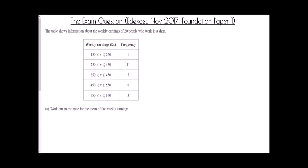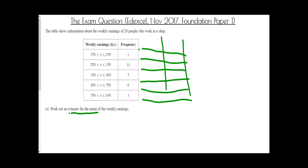Now for the exam question from the NXEL paper in November 2017, Foundation Paper 1 — a non-calculator question. The table shows information about the weekly earnings of 20 people who work in a shop. We need to work out an estimate for the mean weekly earnings. We add extra columns for midpoints: 150 to 250 → 200, 250 to 350 → 300, 350 to 450 → 400, 450 to 550 → 500, and 550 to 650 → 600. The total frequency is 20.